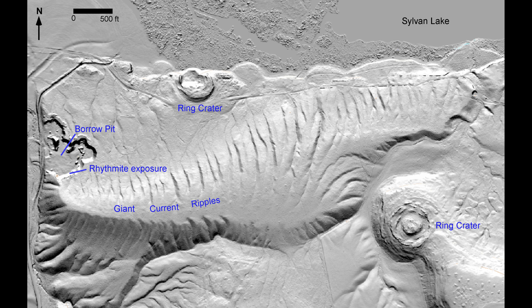Two of these features, giant ripples and rhythmites, are depositional in nature. While the third, ringed craters, result from erosion and wearing away of the underlying basalt bedrock during outburst flooding.